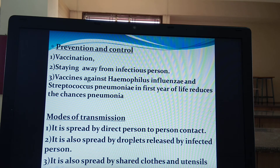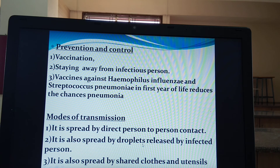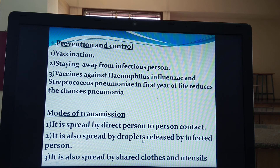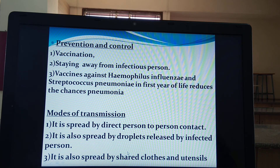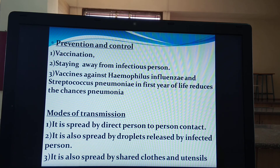Droplet infection is because of sneezing. In case of coronavirus we use a mask to prevent this droplet release — so if droplets are released because of sneezing or coughing, it can be prevented. For pneumonia also, preventing droplet infection is important. So these are the prevention, control, and modes of transmission for pneumonia.